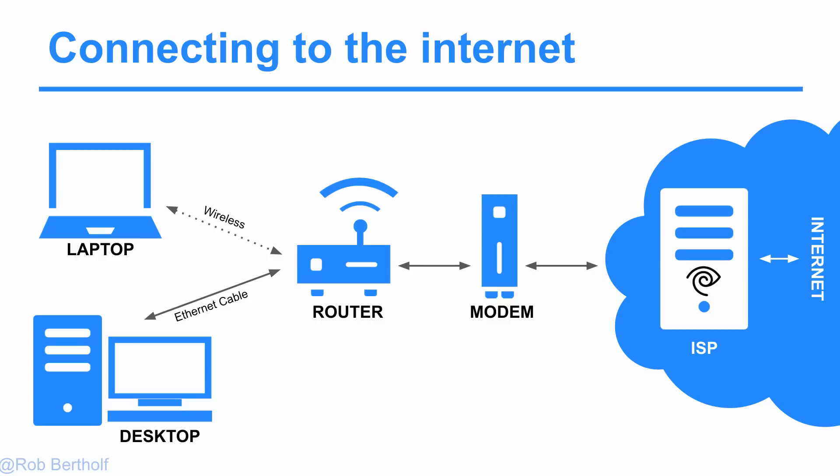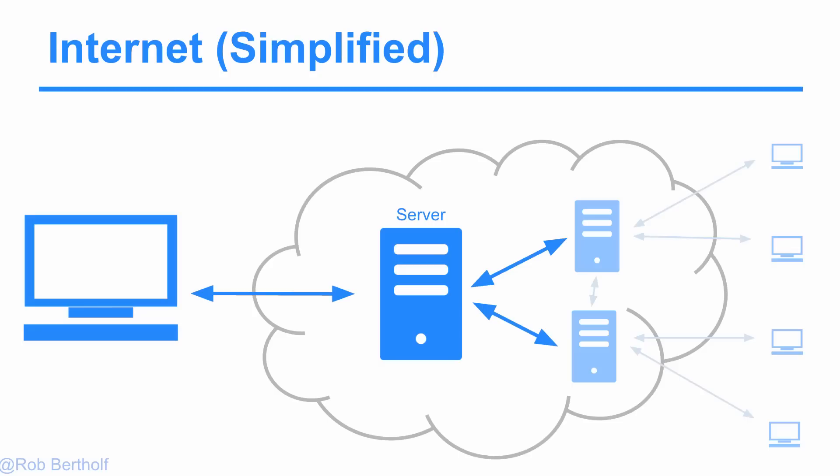Once you've connected to your ISP, or internet service provider, you're essentially on the internet and can now browse other servers that are available. The internet in its simplest form is our computer connecting to a server, connecting to the cloud, connecting to files off our computer. Those servers can connect to other servers that also hold files, and they can connect to other computers — it's kind of a web, a huge mixture of computers connected to each other, sharing information and sharing files.